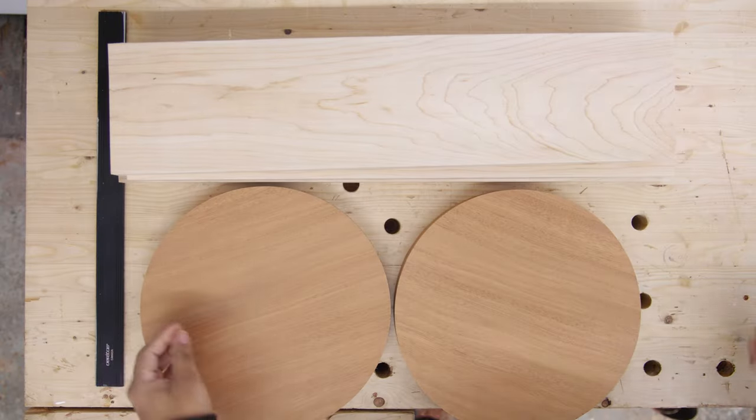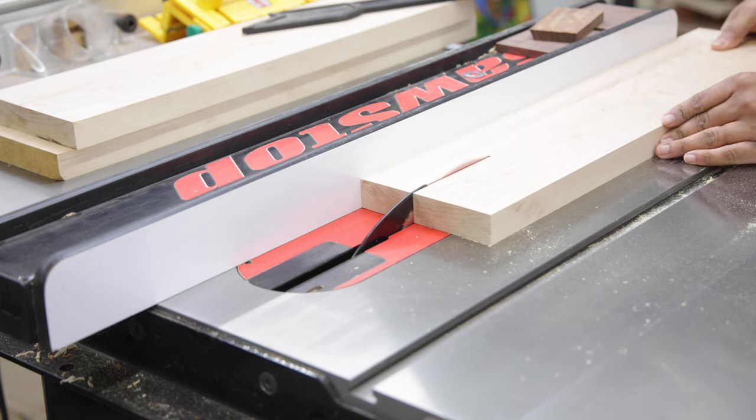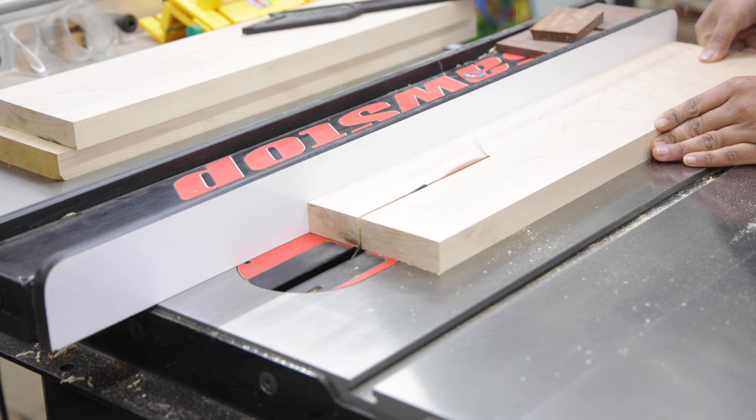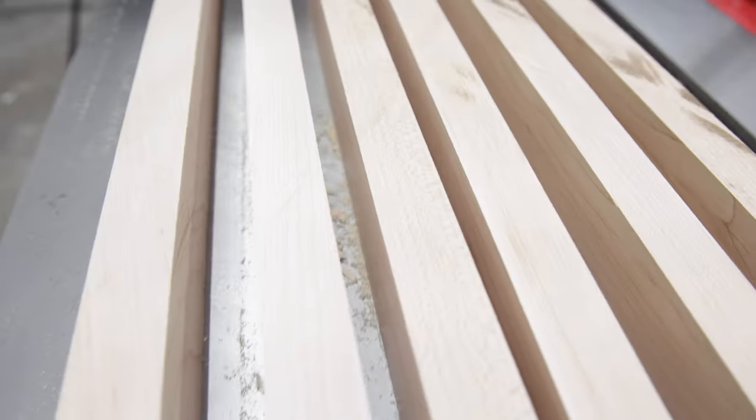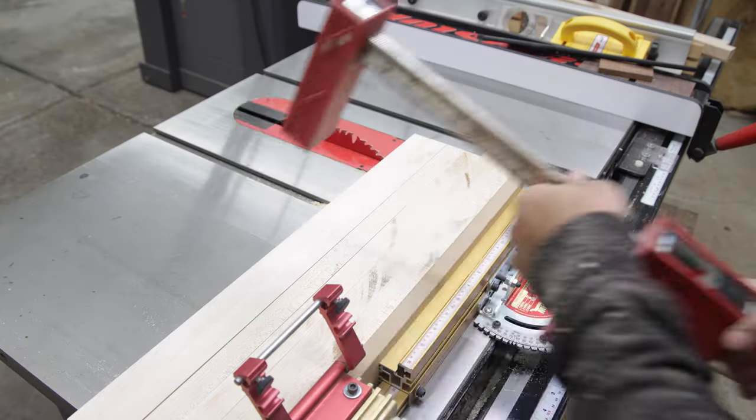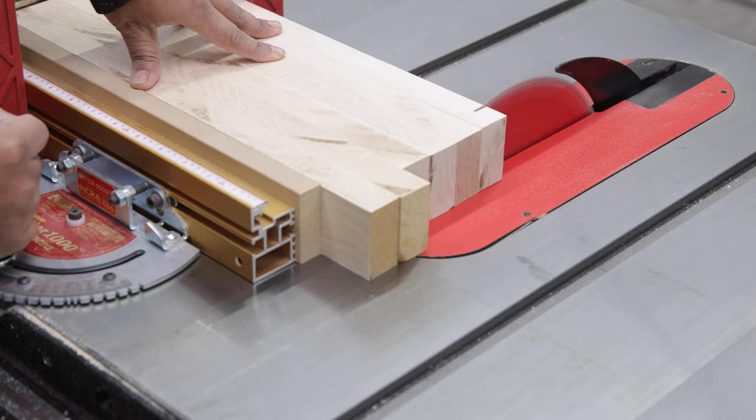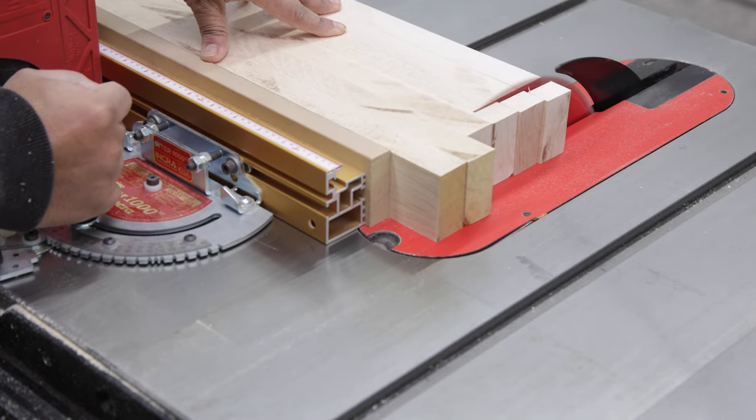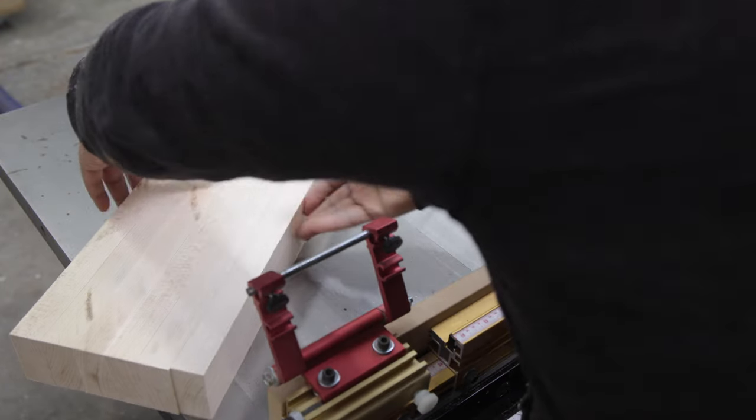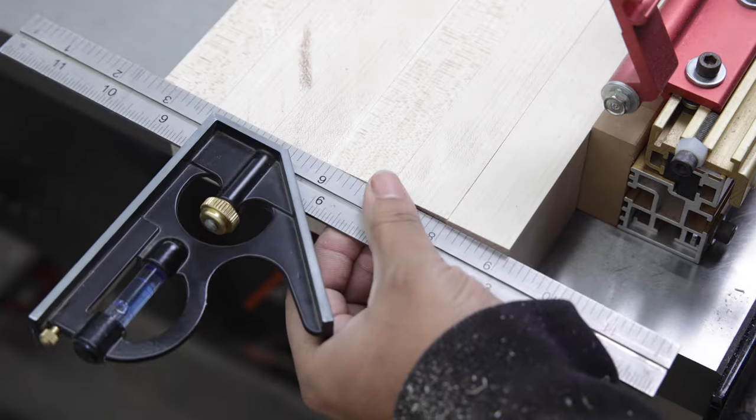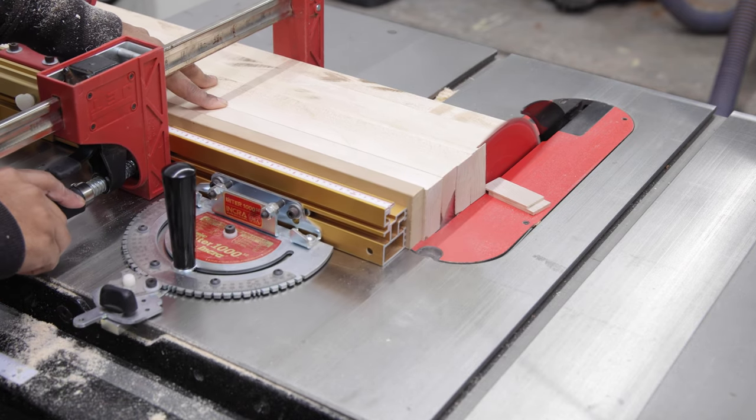With circular top completed, we can now turn our attention to the maple legs and rip the pieces to our desired width. Then we can clamp all of the pieces against a miter gauge and trim one end to be square. We can then flip over the pieces making sure all of the freshly cut edges align well, and then trim the second end to our desired length of 23 inches.